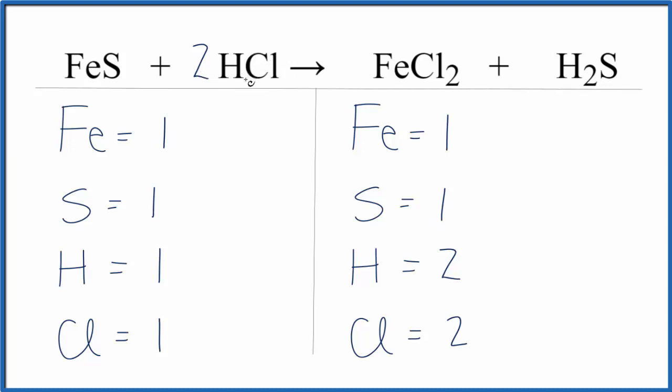So let's do that. We have 1 H times 2, that gives us 2. So now the hydrogens are balanced. We have 1 chlorine times 2, 2 chlorines. Now the chlorines are balanced, and we're done.